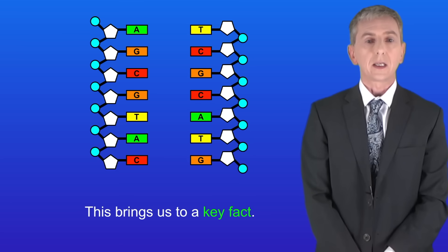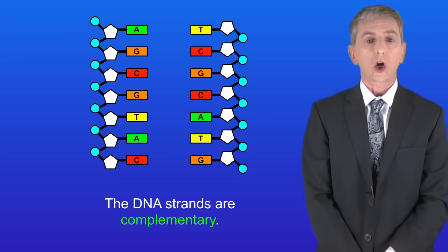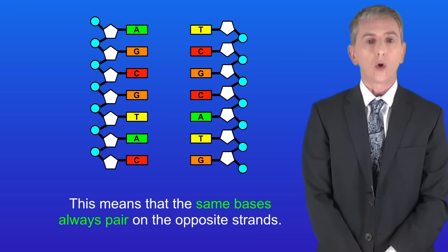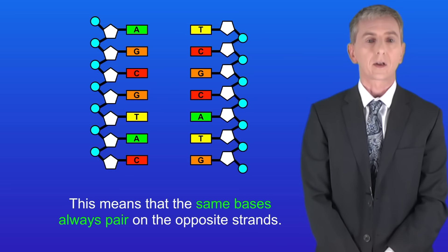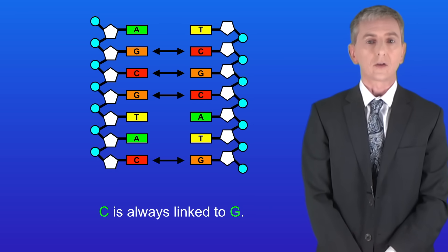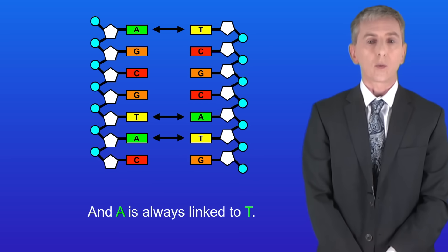Now this brings us to a key fact. The DNA strands are complementary. This means that the same bases always pair on the opposite strands. C is always linked to G and A is always linked to T.